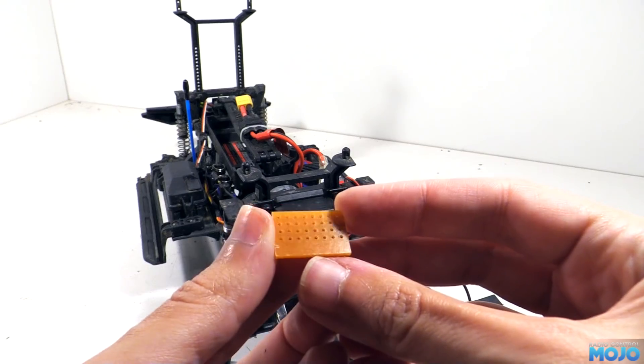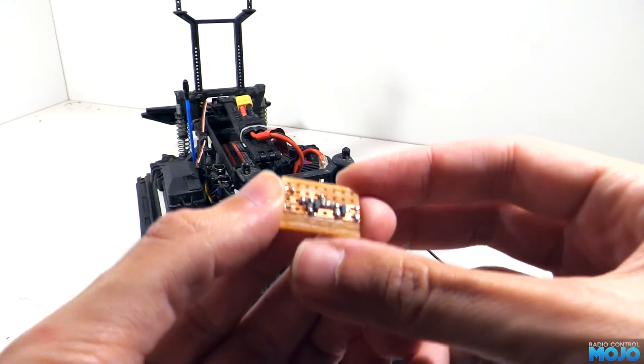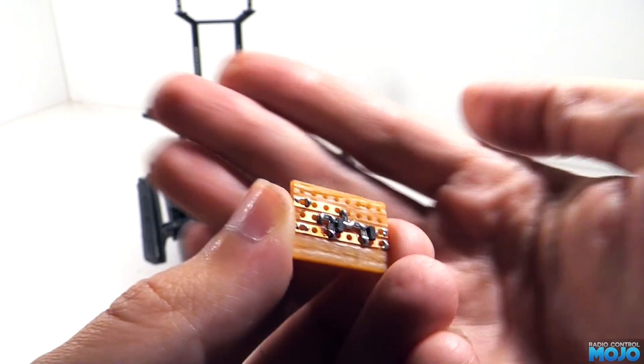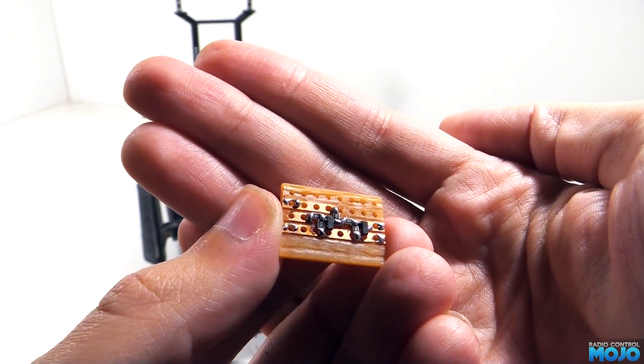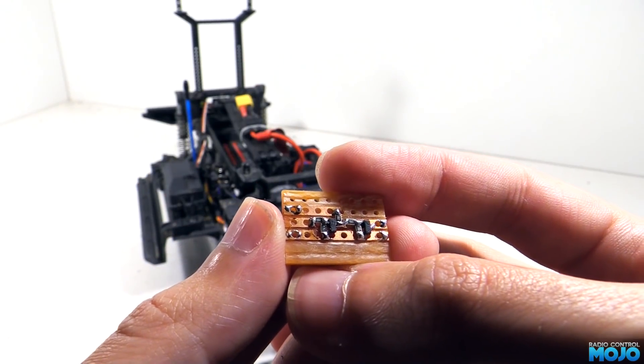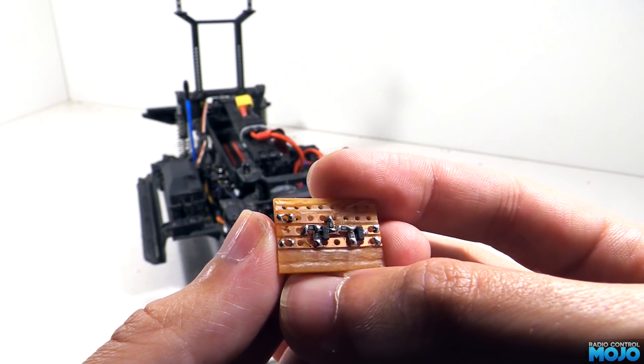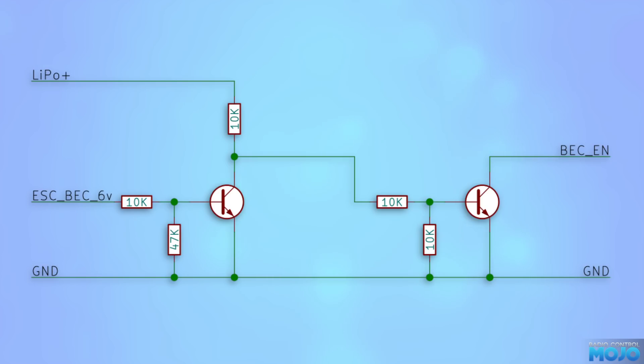And this is where it's going to get a bit geeky. On the little board we've got two transistors and five resistors that do all the hard work for us. Now I'm not going to go into huge detail, this is an RC channel after all, but when the ESC is turned off, the transistor on the right is left on, taking the BEC's enable to ground, turning it off too. But with the ESC turned on, the left transistor gets turned on too. It turns the right-hand transistor off, which enables the BEC. Great fun!